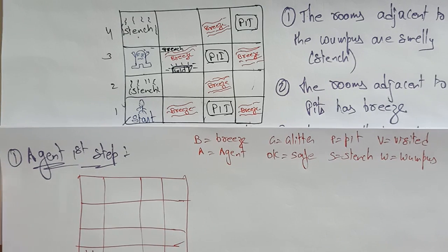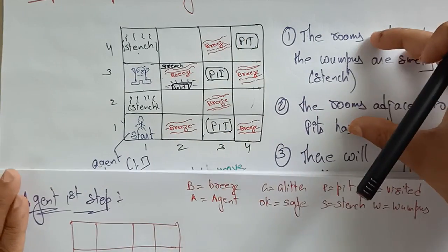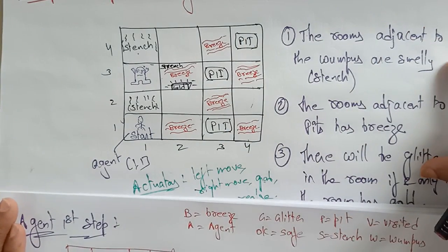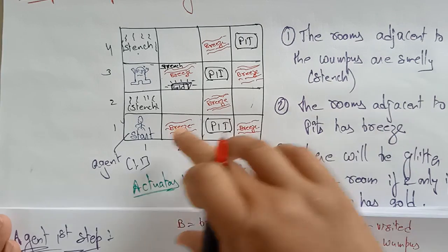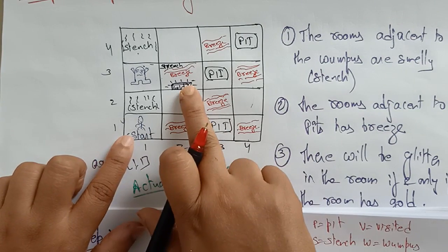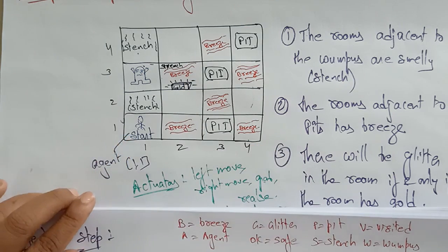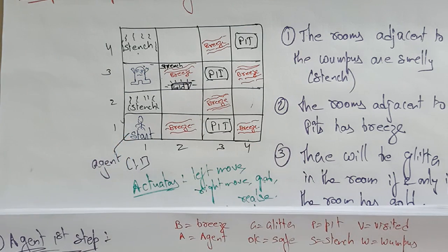Hi students, let's continue with this Wumpus world problem. In the previous video I explained what are the conditions for this Wumpus world problem — what are the things you need to be aware of. With the help of those conditions, you can check each and every room, enter the gold room, take the gold, and exit from the cave.